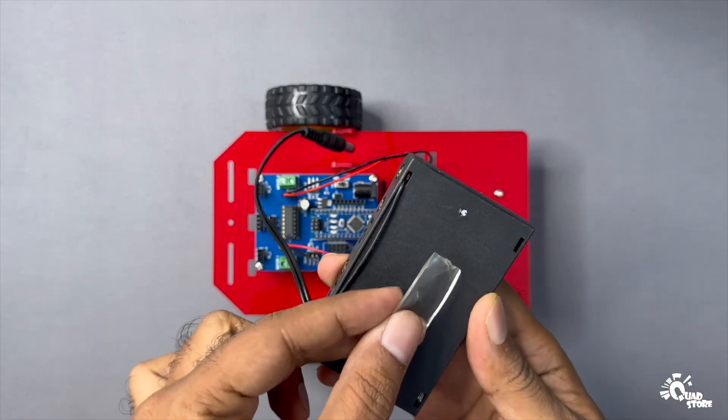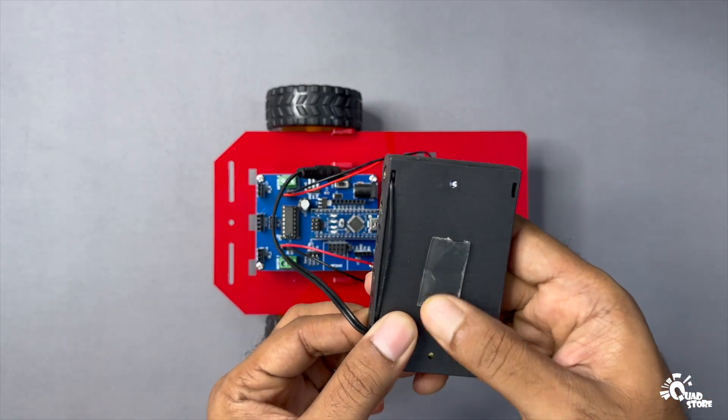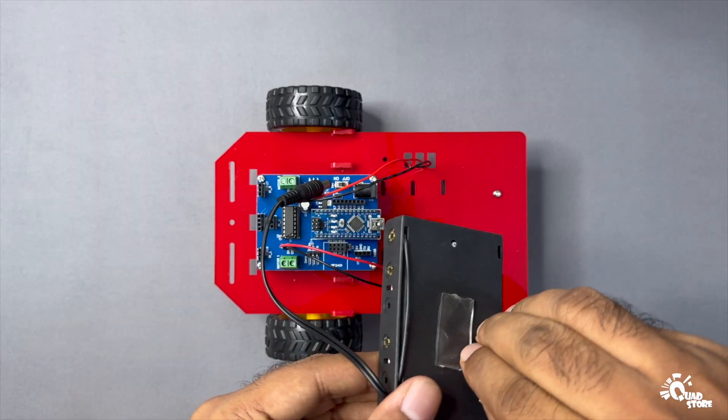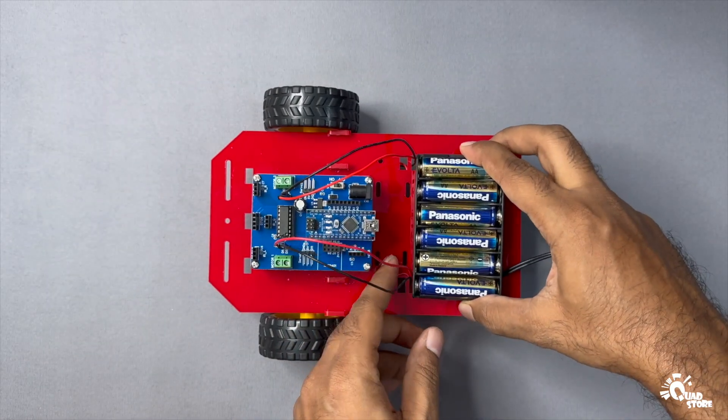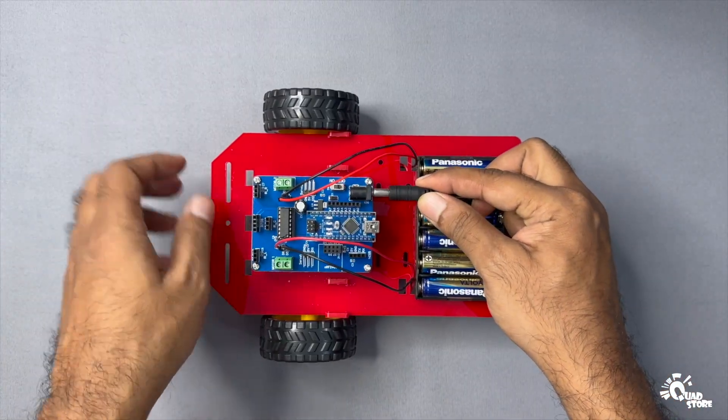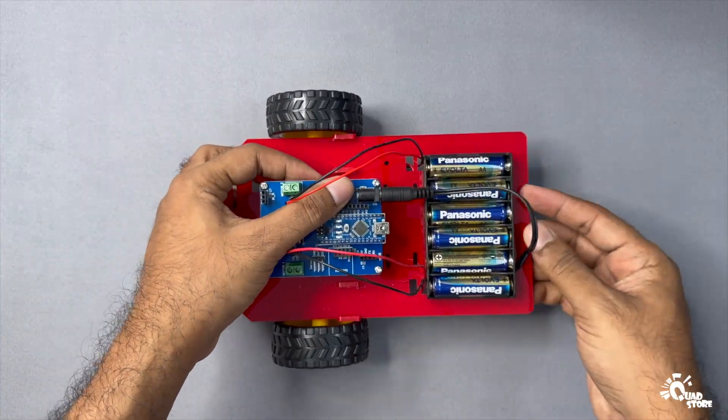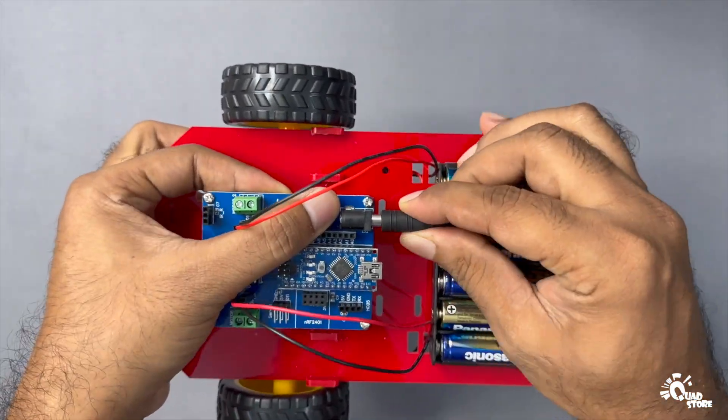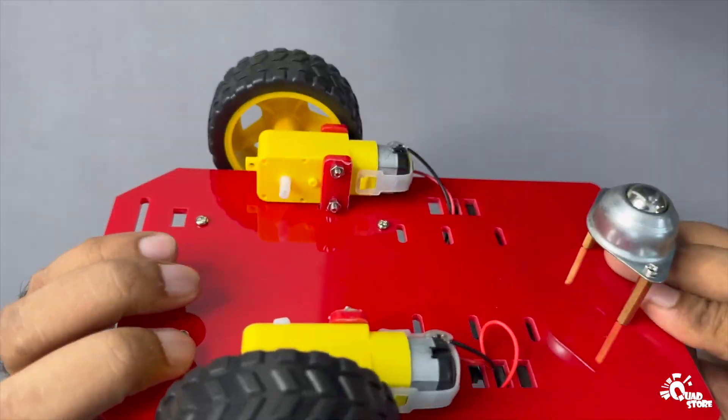Now, let's place the battery holder. Stick a piece of double-sided tape to the bottom of the holder and press it firmly onto the chassis base. This will keep it securely in place. Finally, connect the DC plug from the battery holder to the DC jack on the microcontroller PCB.